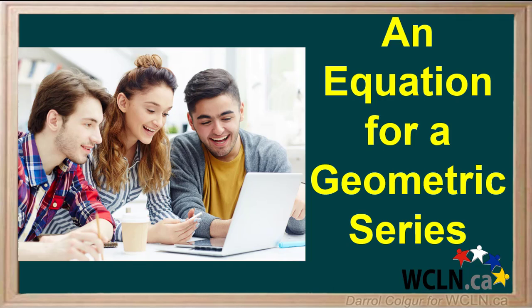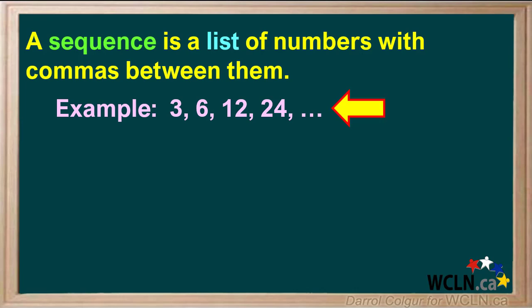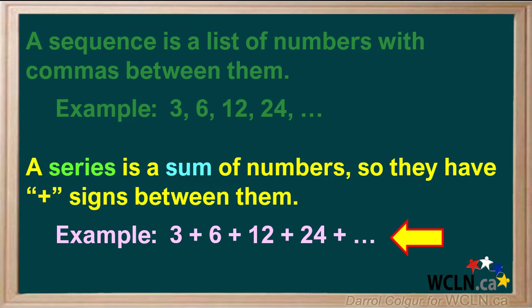A geometric series is like a geometric sequence, but with one major difference. A sequence is a list of numbers with commas between them — here's an example of a sequence. But a series is a sum of numbers, so they have plus signs between them. Here's an example of a series. Notice there are plus signs between the numbers.